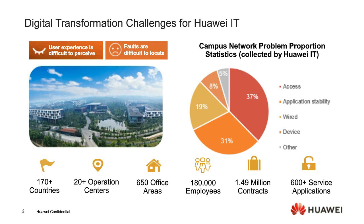On the right-hand side, data from Huawei's IT management system over the last three months shows that 60% of network issues are caused by the access network — primarily Wi-Fi — while another 30% are caused by applications, meaning quality of service for voice calls, video conferencing, WeChat, or cloud file transfers. The major problem causing network issues comes from the Wi-Fi network, with 40% from Wi-Fi and device issues, plus others.